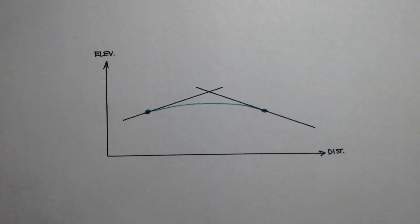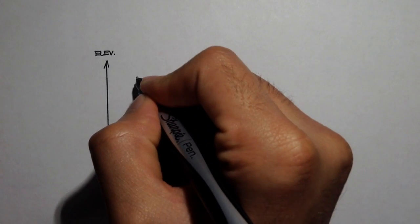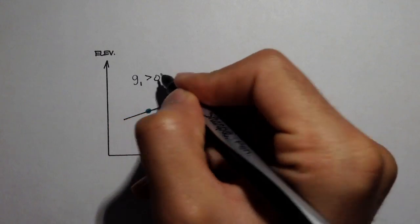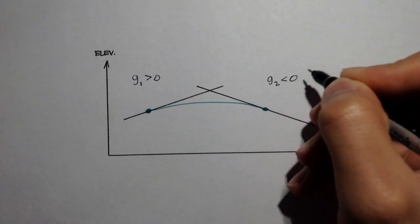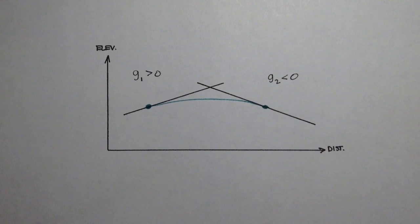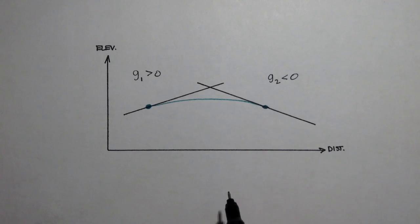I've already drawn out a curve here, and as you can tell this would be classified as a type 1 crest curve. The entering grade, grade 1, is positive and the exiting grade, grade 2, is negative. You can also tell because this is a concave down vertical curve — this would be a type 1 crest curve.